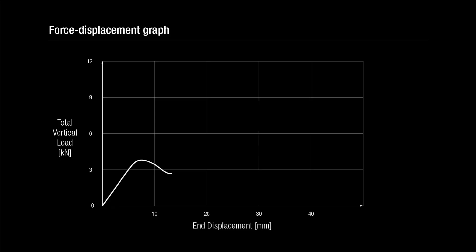The graph shows an initial linear relationship between the applied force and the vertical displacement. This corresponds to the bending of the beam.